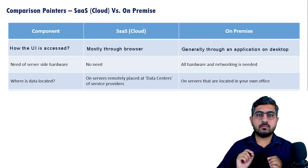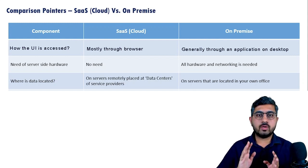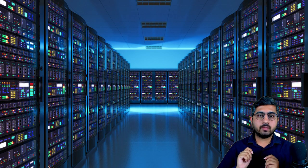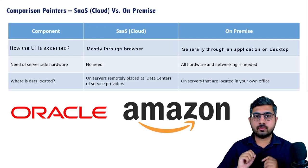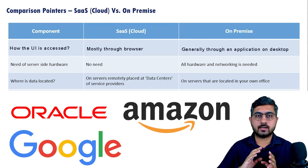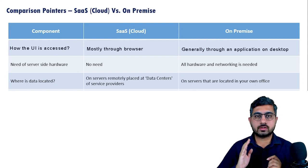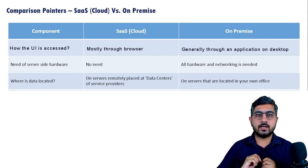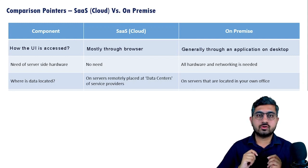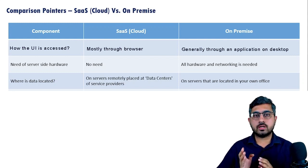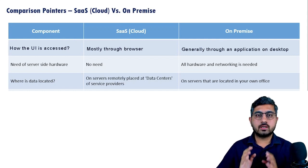The third comparison point is where exactly the data is located. You may have heard of the term 'data center' — companies like Oracle, Amazon, or Google are setting up data centers in various countries. Data centers are places where large numbers of CPUs or servers are stacked together and connected through the internet. That's where all the data generated by various clients of these software service providers is stored in databases physically located in those data centers.